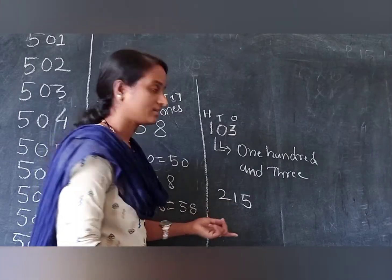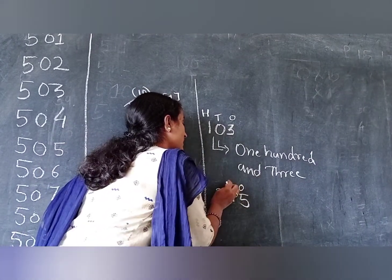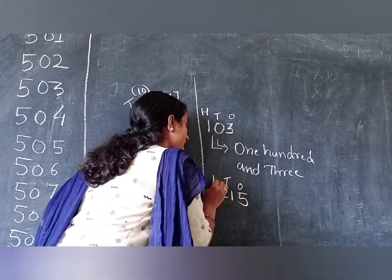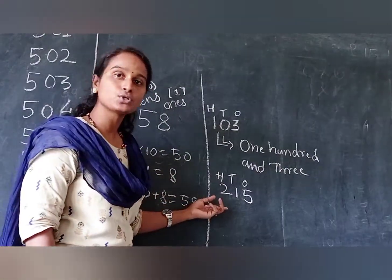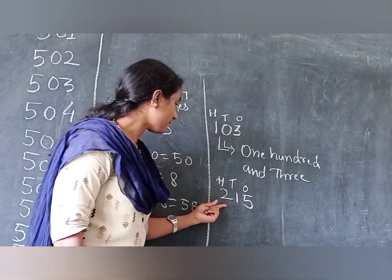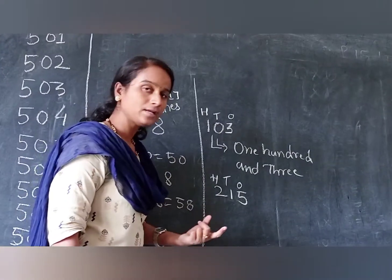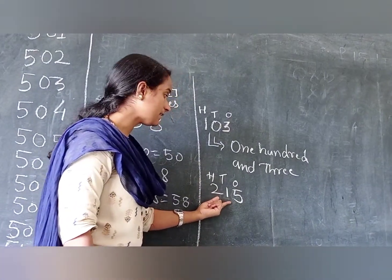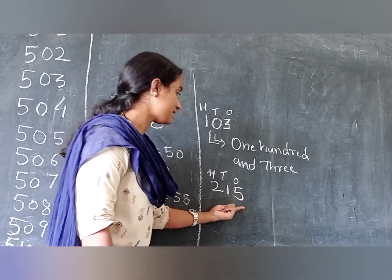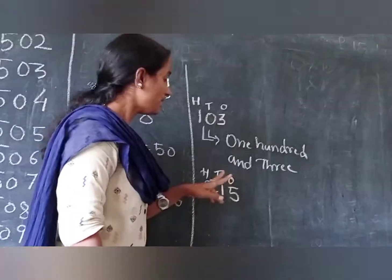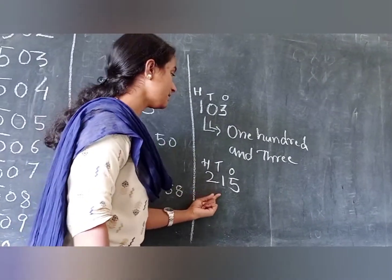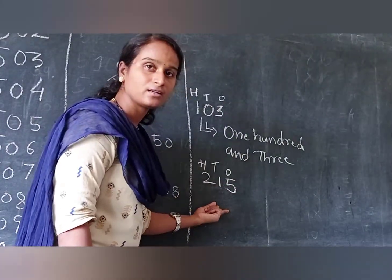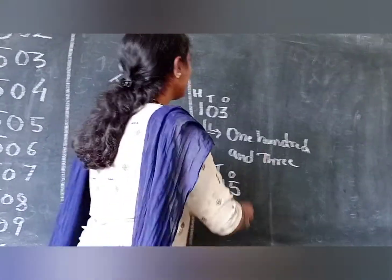Now, how to write this? Let me write the place value: 1's, 10's, 100's. So, in the place of 100's, how much I have? 2. So that is nothing but 200. Here, how much I have? 1, that is nothing but 10. This is 5. By adding these 3 numbers, how much I have? 215.